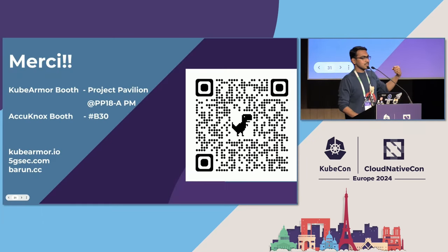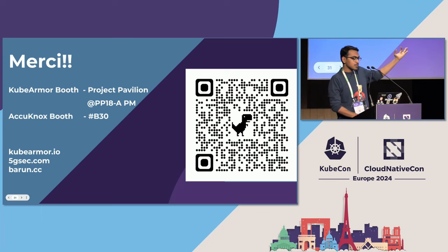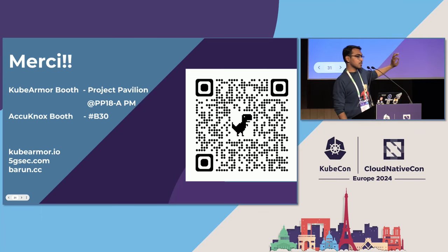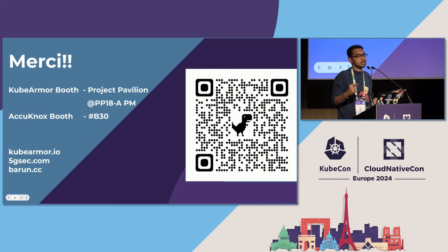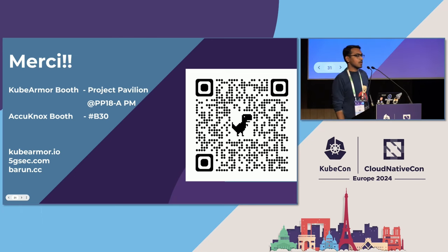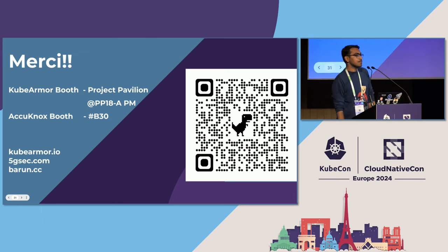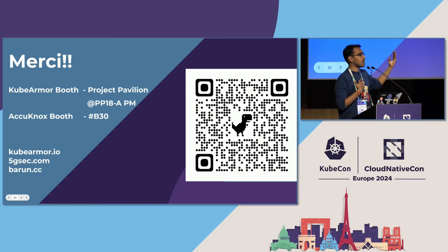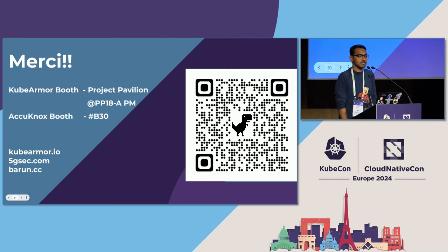Thank you. This is a QR code for KubeArmor — you can check out the KubeArmor project. If you want to know more about the Nimbus project, it's still in works, but all of this is being made as part of 5gsec.com. If you're around tomorrow, I'll be available at the KubeArmor booth as well as the Accuknox booth. These are the numbers in the solution showcase.